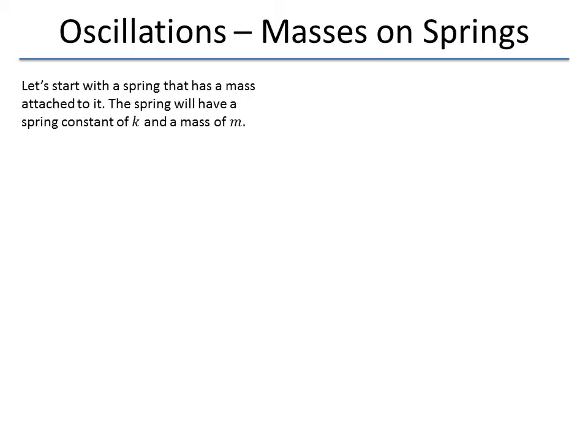So, let's start with a spring, and we're going to put a mass on it. The spring's going to have a spring constant of k, the stuff we've covered before, and it's going to have a mass of m.